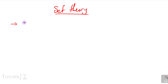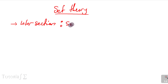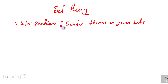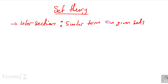Term number one is intersection. Intersection basically means looking for similar terms in given sets. It is usually denoted by the symbol ∩.